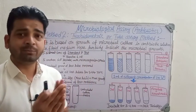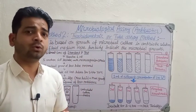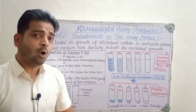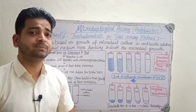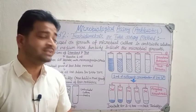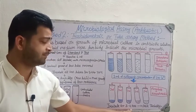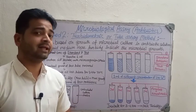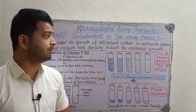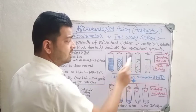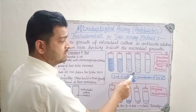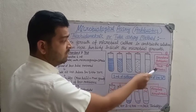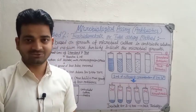Ultimately, the turbidimetric method uses turbidity to indicate how much microbial growth occurred during the three to four hour incubation period. We then compare the test antibiotic tubes with the standard antibiotic tubes to assess effectiveness. Thank you.